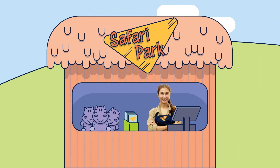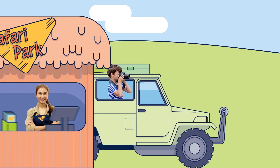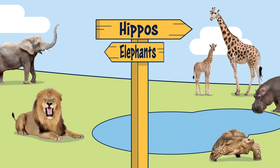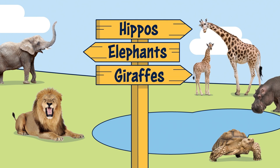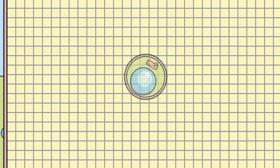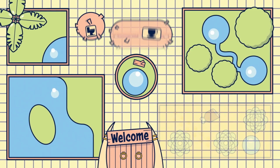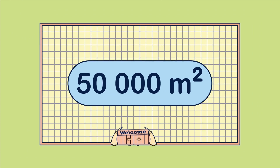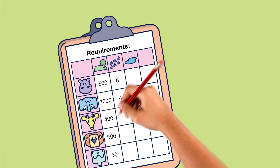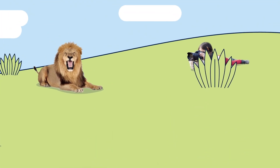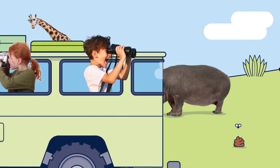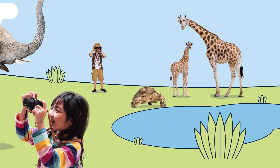In this investigation, you will design an animal-friendly safari park. You will decide the area and placement of the enclosures for hippos, elephants, giraffes, lions and tortoises, as well as other special features and facilities for visitors. All of your features must fit in the 50,000 square metre area of the park, and your animal enclosures must meet the Global Wildlife Foundation requirements so that all the animals have room to roam. Are you ready to let your creative side run wild? It's time to investigate.